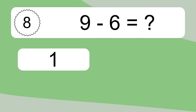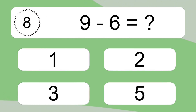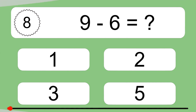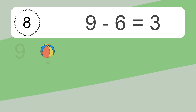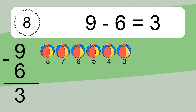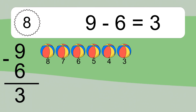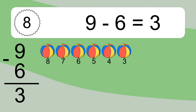9 minus 6 equals what? 9 minus 6 equals 3. Let's count it: 8, 7, 6, 5, 4, 3.